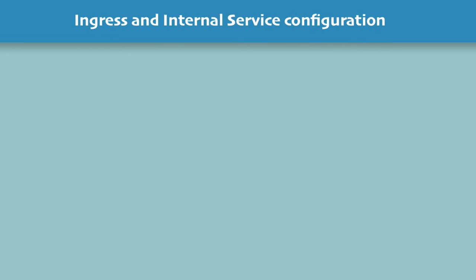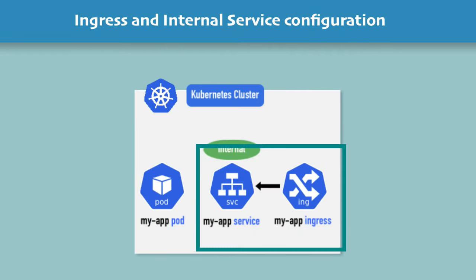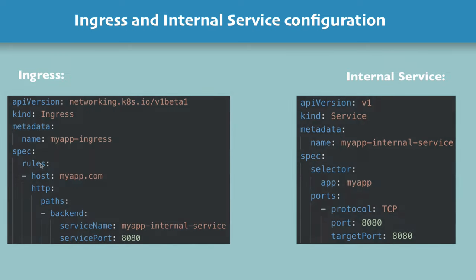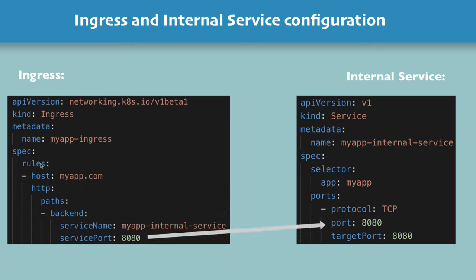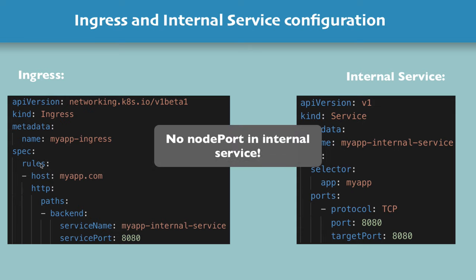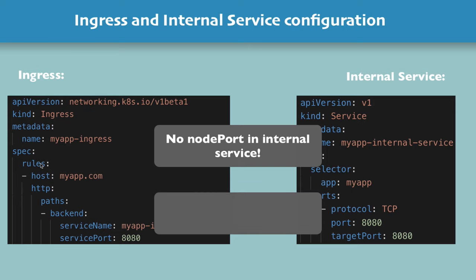Now let's see how the internal service that corresponds to this ingress will look. The backend is the target where the incoming request will be redirected. The service name should correspond to the internal service name, and the port should be the internal service port. The only difference between the external and internal services is that here the internal service does not have the node port starting from 30000. The type is the default type — not a load balancer — but the internal service type, which is cluster IP.